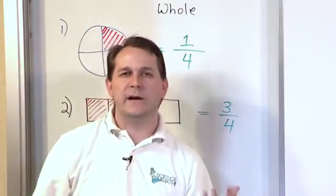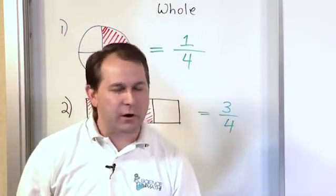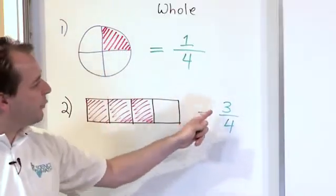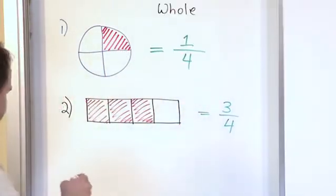This is representing less than one candy bar. It's not a whole candy bar. It's less than that. I'm giving him three out of four pieces. So that's the fraction three fourths.